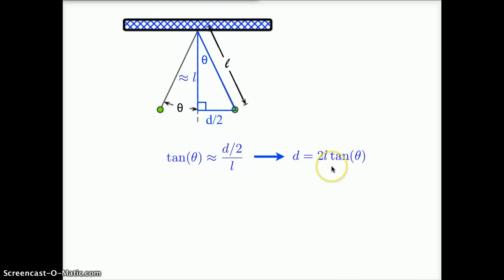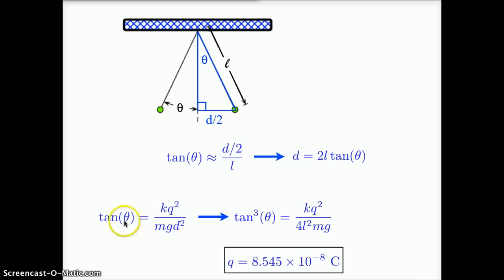At this point, we could solve for d and get a numerical value for d. Dr. Kopp did not plug in any numbers until the very end. So once he found that d equals 2L tangent theta, he went back to his tangent theta equals kq squared over mg d squared equation, plug in 2L tangent theta for d, and we get tangent cubed of theta equals kq squared over 4L squared mg.